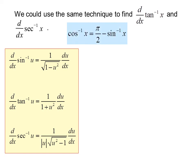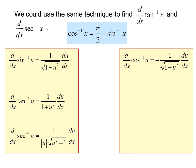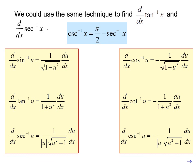We know that the inverse cosine of x equals π/2 minus the inverse sine of x. Using that identity, the derivative with respect to x of inverse cosine u equals negative 1 over radical(1 minus u²) · du/dx. Similarly, inverse cosecant x equals π/2 minus inverse secant x, which leads to the derivative with respect to x of inverse cosecant u equals negative 1 over |u| · radical(u² minus 1) · du/dx.